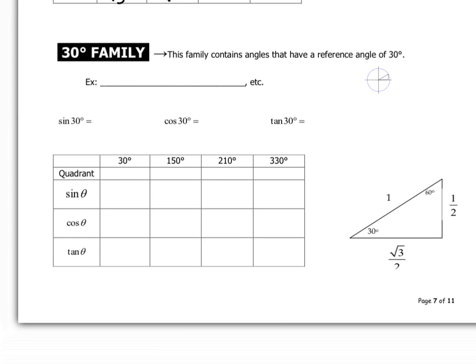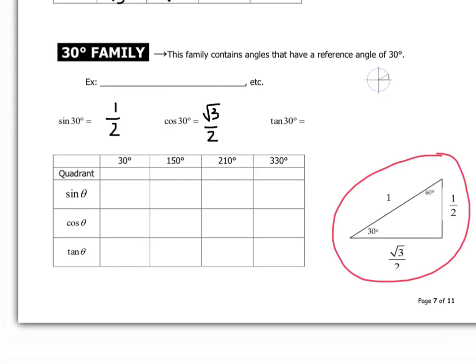Our final family is the 30-degree family. We've actually already done the work for this, because the triangle for the 30-degree family is the same as for the 60-degree family — we simply shifted the angle we're referring to. Now referring to the 30-degree angle in the same triangle, you discover that the sine is 1 half, the cosine is root 3 over 2, and the tangent is opposite over adjacent: 1 half divided by root 3 over 2, which is 1 over root 3.